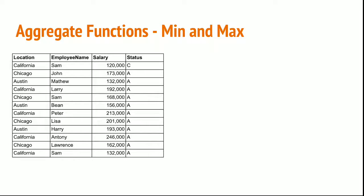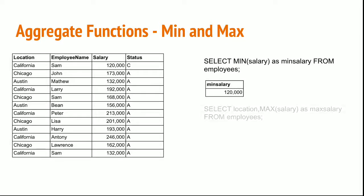For MIN and MAX — if you want to find the minimum salary from this table, you can simply type SELECT MIN(salary) FROM employees. This gives the overall minimum salary across all locations. If you want the min or max for a particular location, you use the GROUP BY clause.